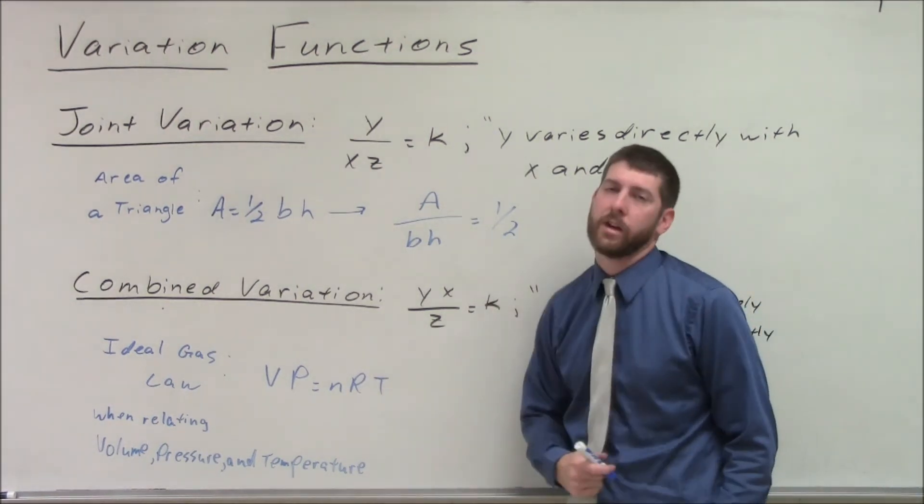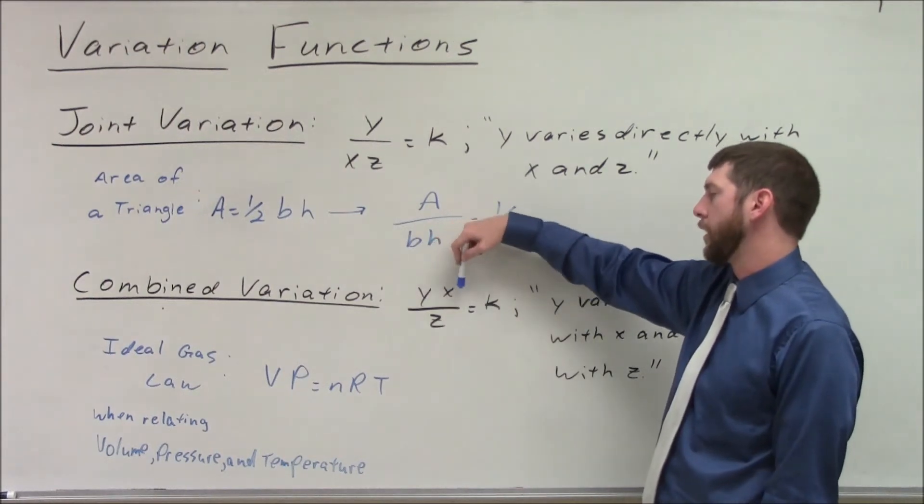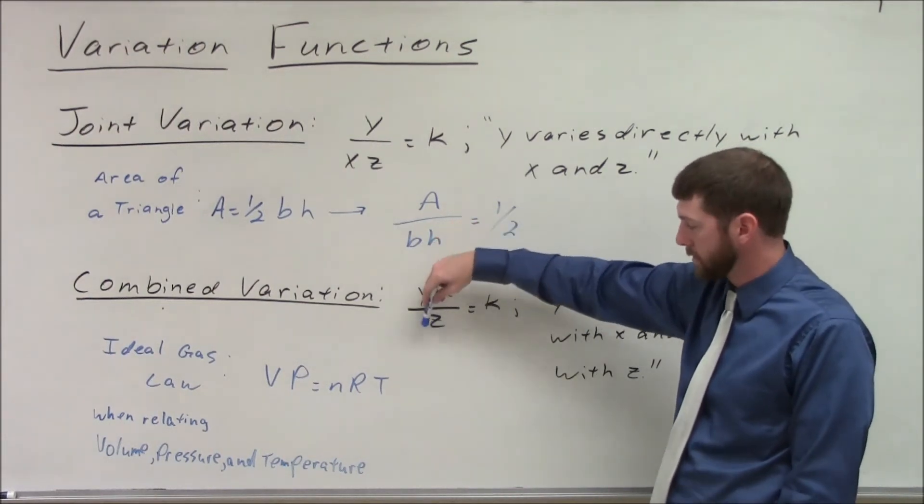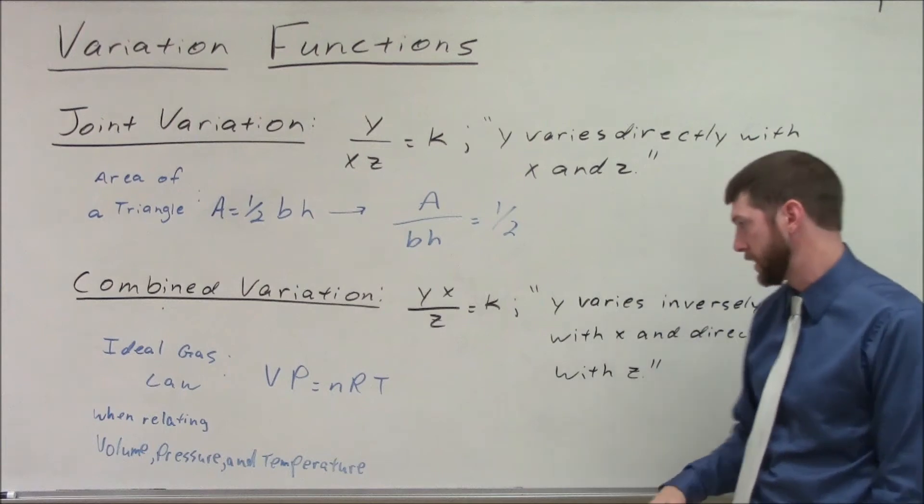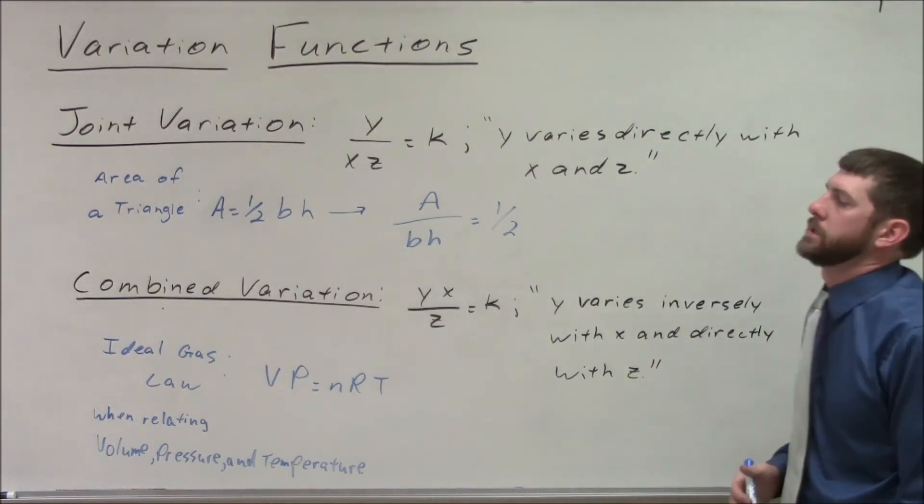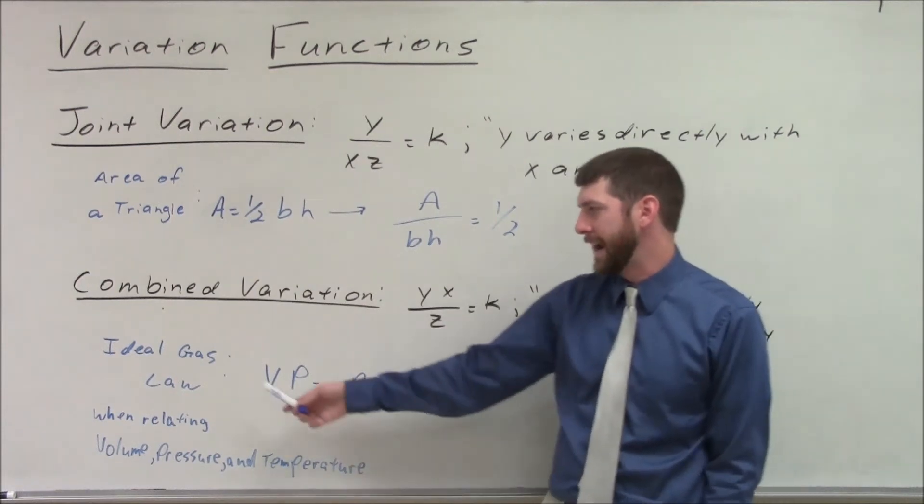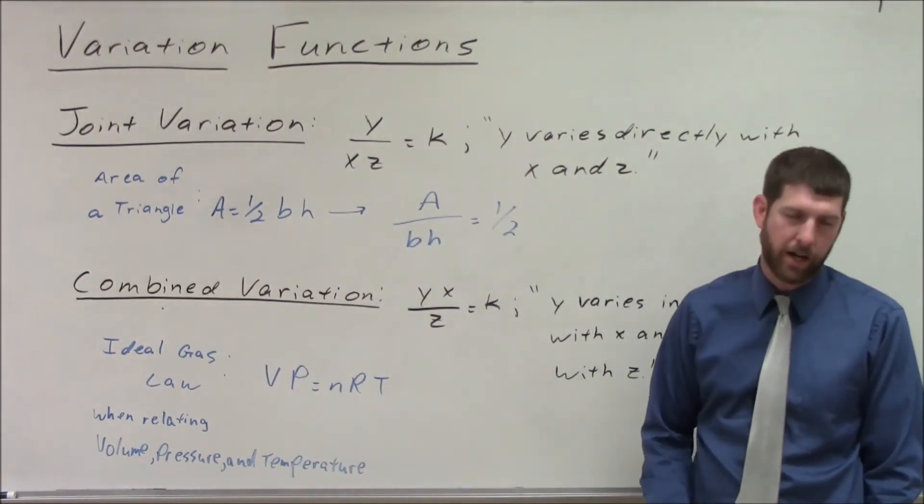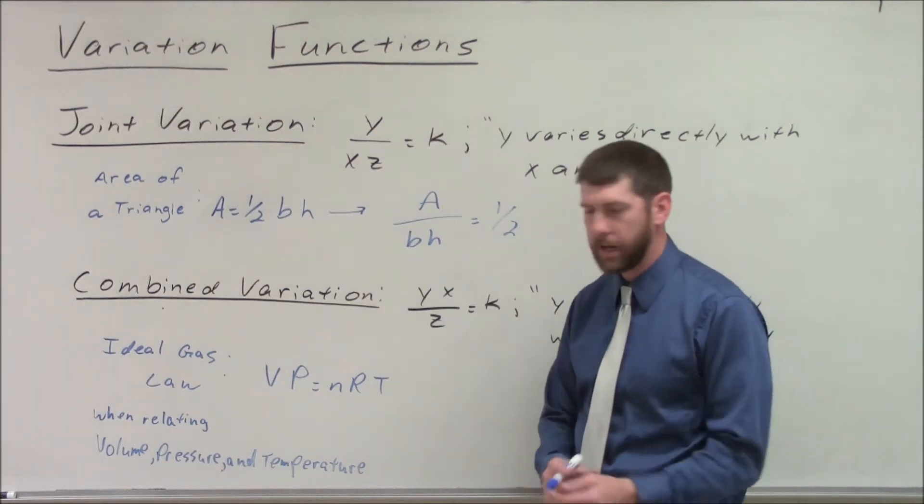Now, combined variation varies the y with, directly with the z and inversely with the x. Y varies inversely with x and directly with z. So an example of that would be the ideal gas law when we're relating volume, pressure, and temperature together.